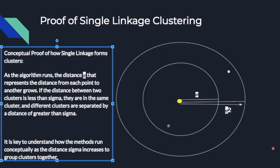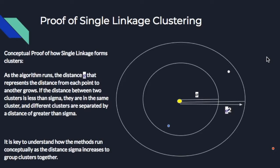To prove single linkage clustering conceptually: for each iteration of a single linkage clustering algorithm, the minimum distance between clusters starts to grow. We will call this distance sigma. As sigma grows, every point within distance sigma is going to belong to a cluster, and all points will begin to belong to the same cluster as it encompasses the entire space.